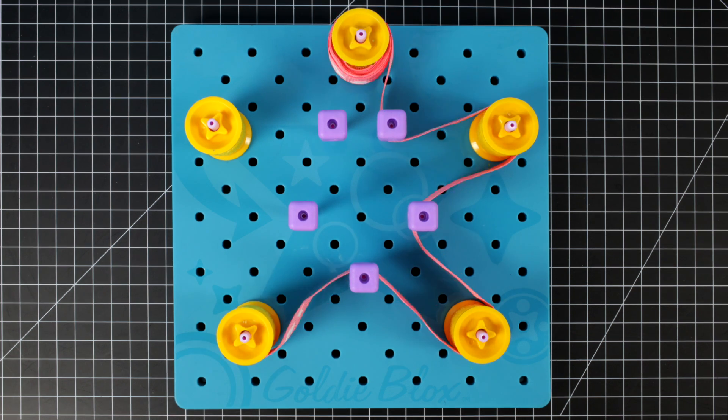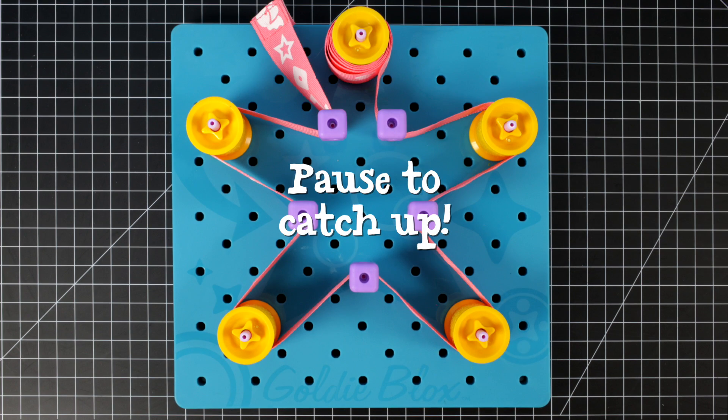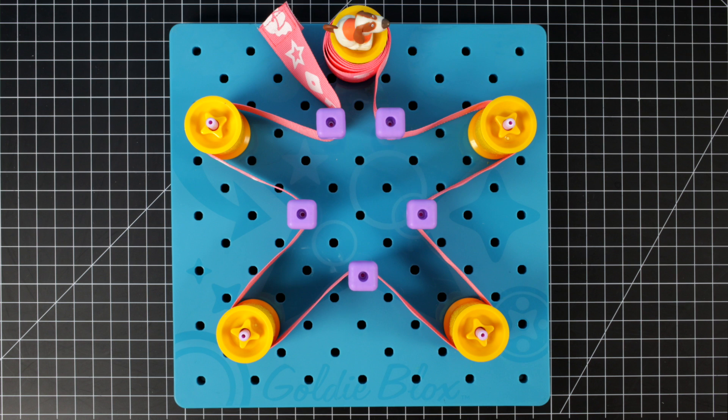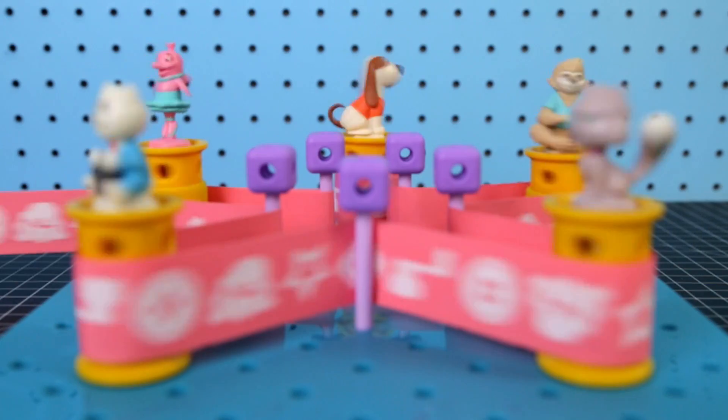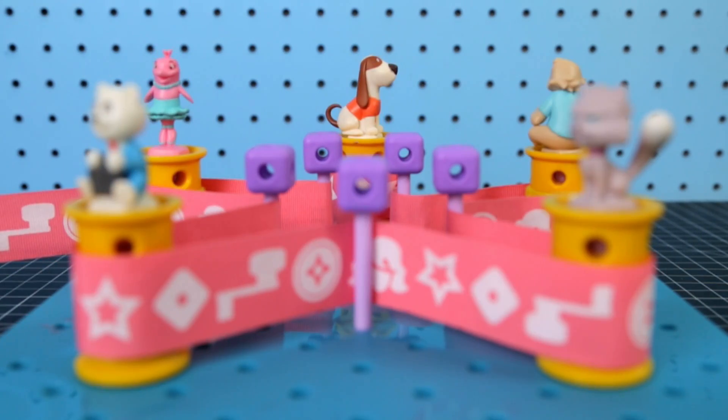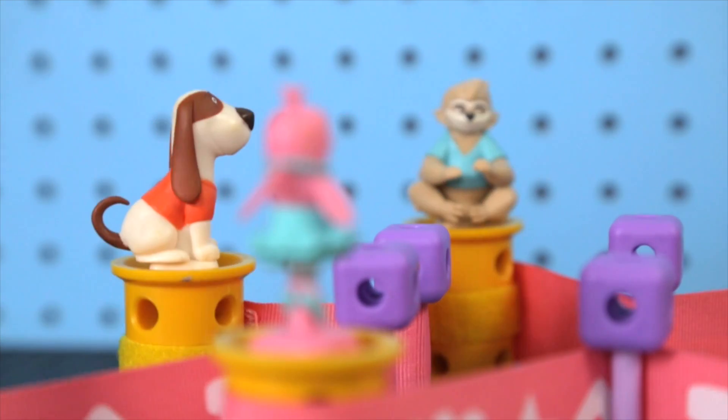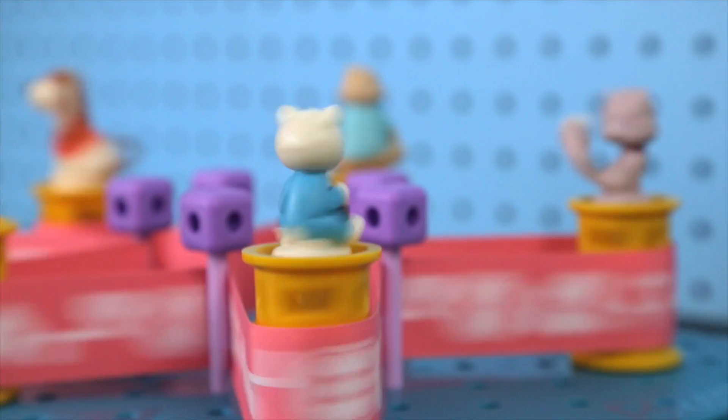String it between the axles and wheel. Now add your characters to the tops of each wheel. Give the other end of the ribbon a pull and watch them spin. Whoa, that was fast! See you around.